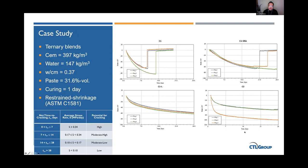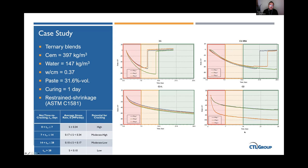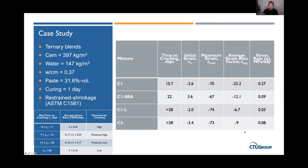When the latex-modified mixtures were used, performance improved further and 20 days without cracking was achievable. Using the ASTM C-1581 table—with its high, moderate-high, and moderate-low cracking potential categories—it is clear which concrete mixture is recommended for a particular project depending on specification requirements and available materials. The table also summarizes the mean time to cracking and the strain and stress rate metrics for all four mixtures.